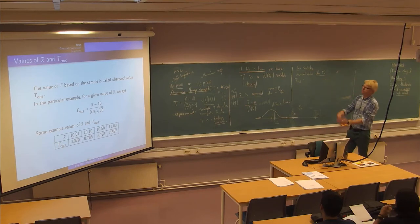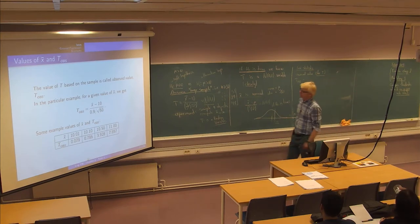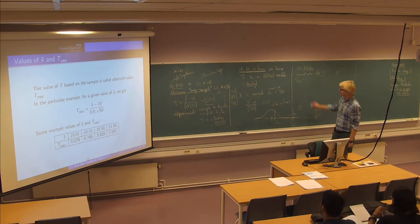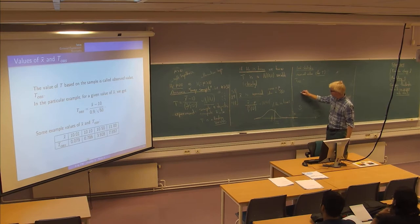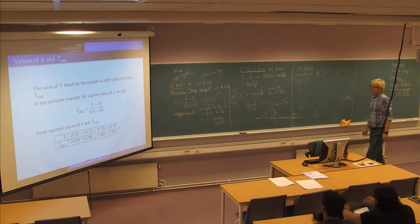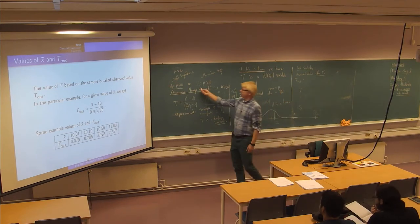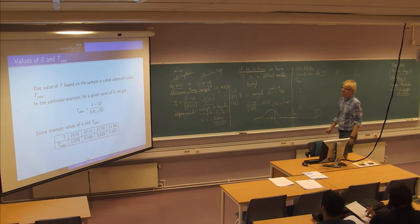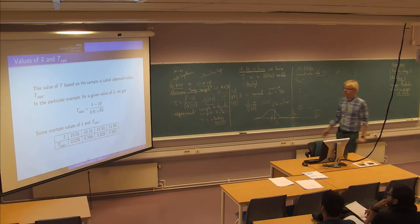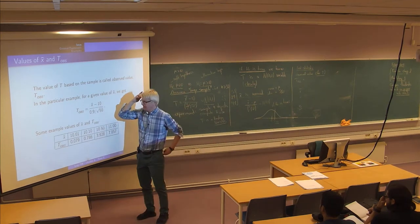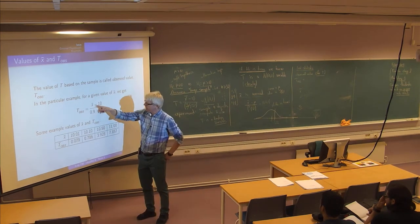We talked about population and some parametric form of the hypothesis, and then how we used sample estimates to see whether the sample constitutes some sort of evidence for the alternative. We are still in illustrative and intuitive examples, and we saw that there was a very good idea to look at this construction.